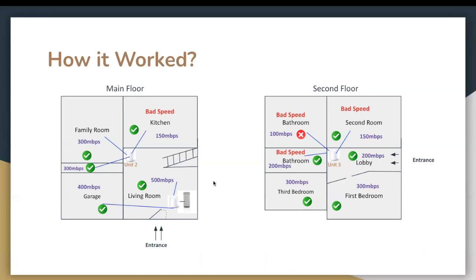On the second floor, the main Deco was powering the first and third bedrooms at 300 Mbps with good coverage. Unit 3 was covering the bathroom and the second room — coverage improved but speeds were 200, 100, and 150 Mbps. Compared to the previous 50 Mbps in the second room, this placement moved it up to 150 Mbps, so it was a good setup but there was still room for improvement.